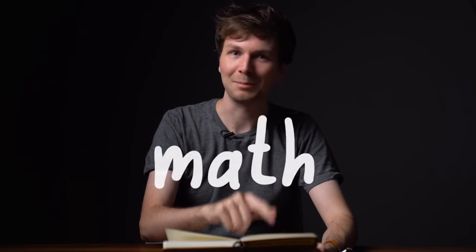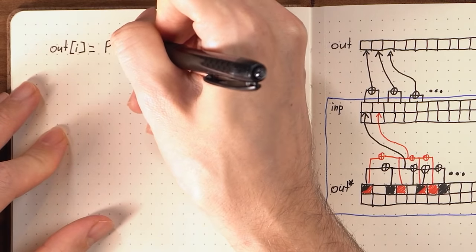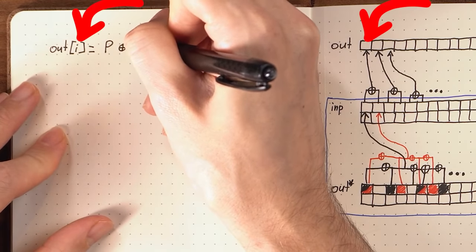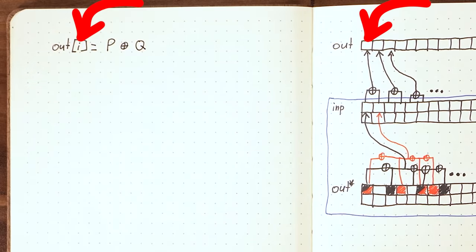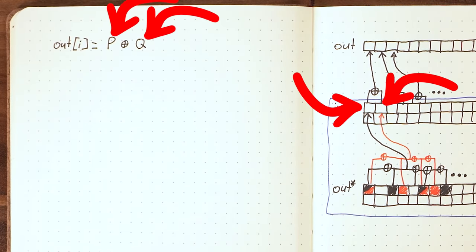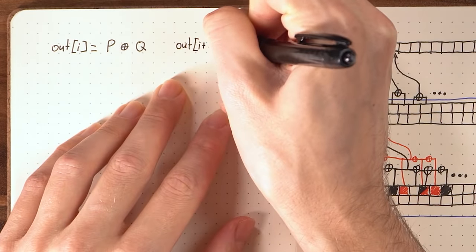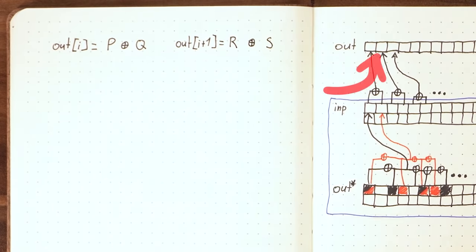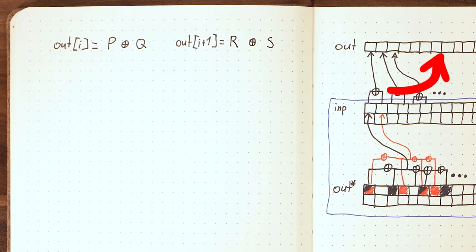I decided to write down one part of the algorithm in a function notation like in math class. I started from the end of the algorithm again. And as we know, a byte in the OUT array is the result of XORing two values, call it P and Q for now. And the next value in OUT is the result of XORing R and S. Of course the OUT array is longer, but it's just an example.